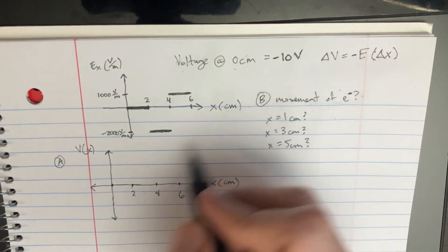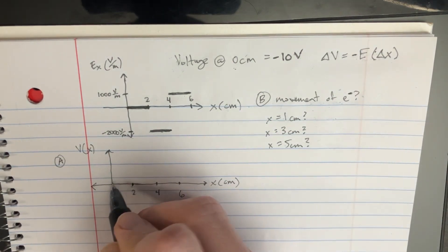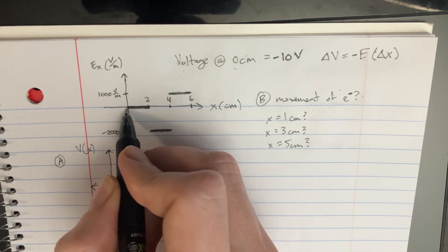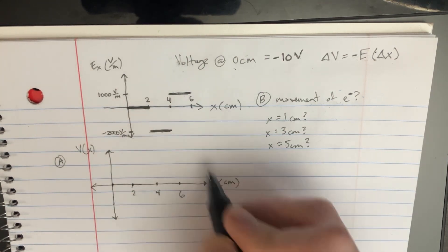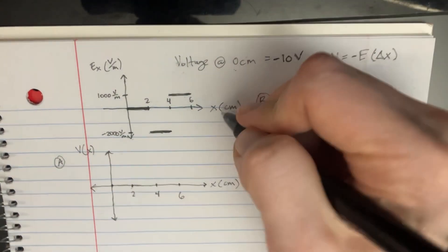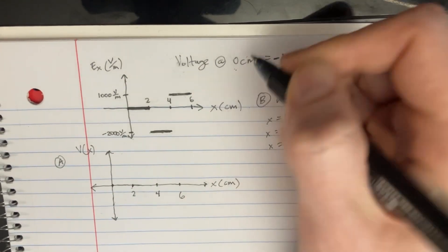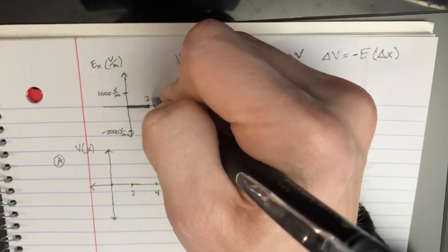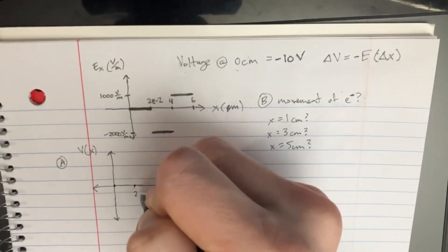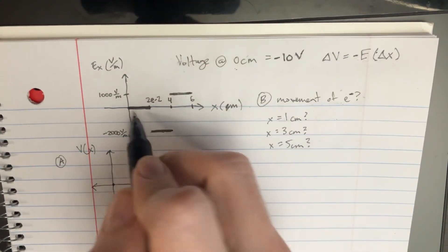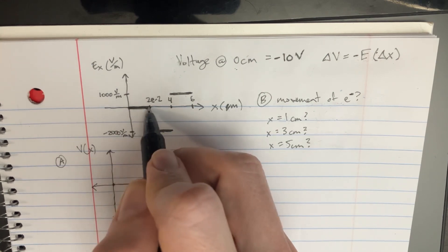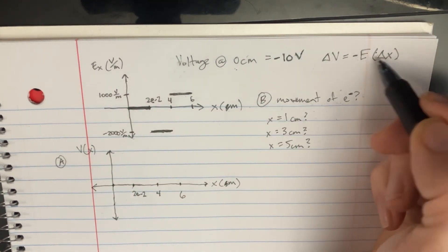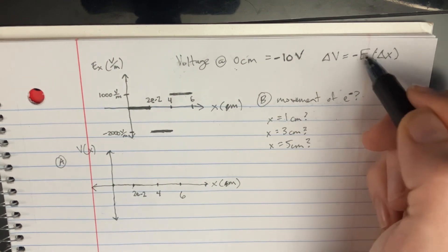Let's try to figure out what happens if we move through a field of 0. If you move through a field of 0 for 2 centimeters — and let's go ahead and change these to meters instead — we're going to get a change of voltage of 0, because it's just 0.